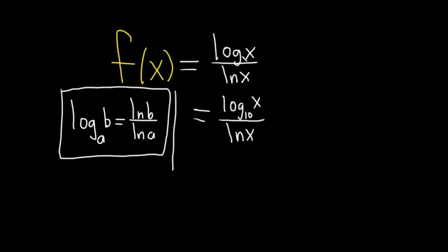Okay, so we could do that because whenever you write log, usually, not always, but usually the base is an implied 10. All right, so now we can apply the change of base formula to the numerator here. So our a is 10 and our b is x. So this will be the natural log of x over the natural log of 10. And I'm going to put this in parentheses here like this, and this is over the natural log of x.